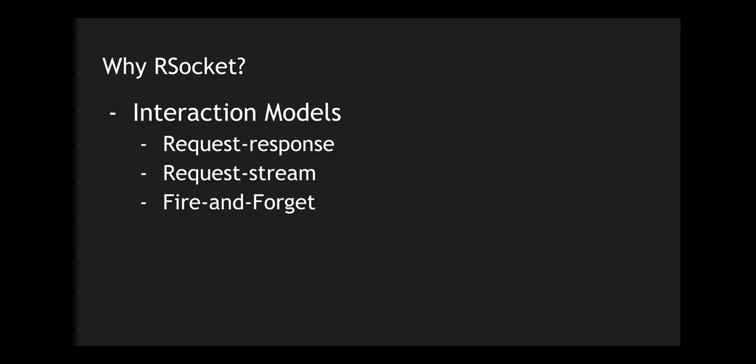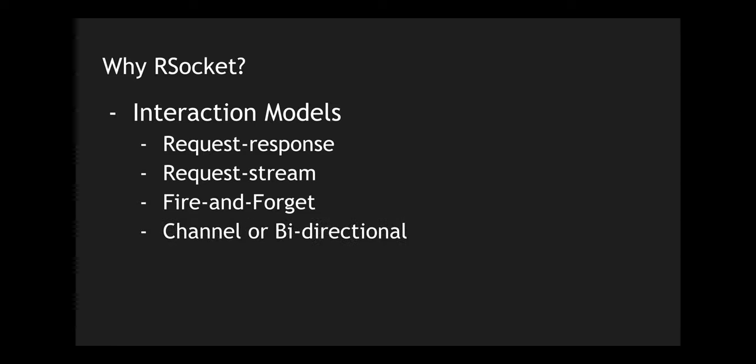The next one is fire and forget. Fire and forget is useful when you want to do a subscription or enable or disable some functionality within the same protocol. For example, the client says 'buy' and the server doesn't need to respond — that's where fire and forget is helpful. The final interaction model is the channel, or bi-directional communication.